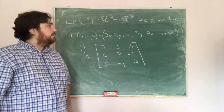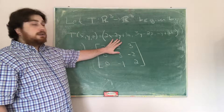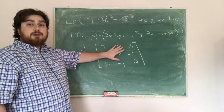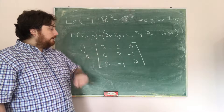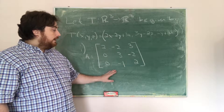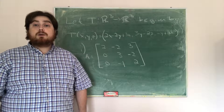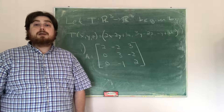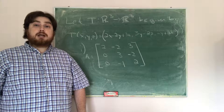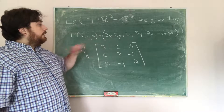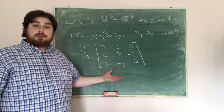Hence the standard matrix — the matrix multiplication that would represent this transformation if we used the standard basis — is the matrix [[2, −2, 3], [0, 3, −2], [0, −1, 2]]. Now what we know is that we're going to have a diagonal matrix if we can find a basis consisting of eigenvectors for this linear transformation, that is the eigenvectors for this matrix.